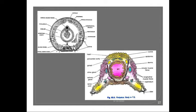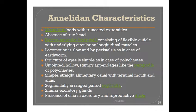That is the third character which makes Peripatus related to the annelids. The fourth feature is that locomotion is slow and by peristalsis, as in the case of the earthworm. The longitudinal and circular muscles in the body wall, which we discussed in previous sessions, are concerned with peristaltic movement. The same kind of peristaltic movement is present in Peripatus, similar to that found in annelids such as the earthworm.